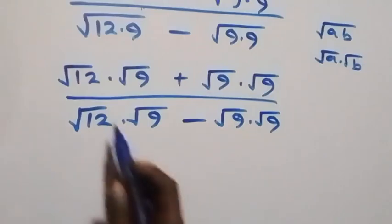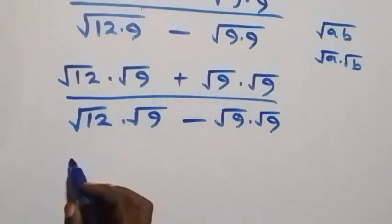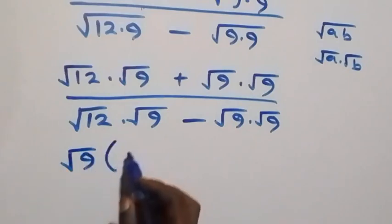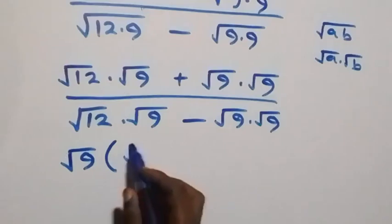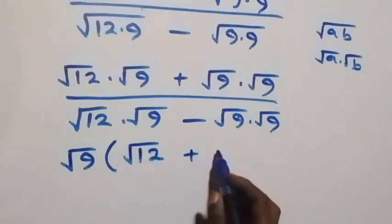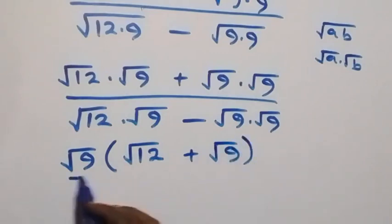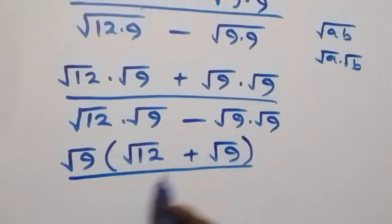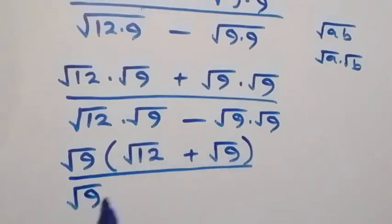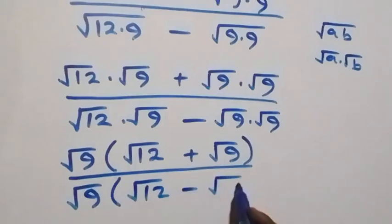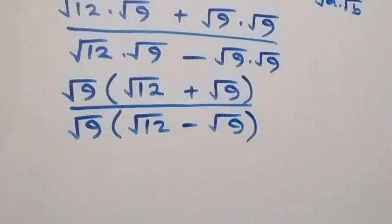From here, root(9) is common so we factor it out. We have root(9) times the bracket, leaving root(12) plus root(9). Then divided by root(9) is also common, so we have root(9) into bracket: root(12) minus root(9), then close bracket.